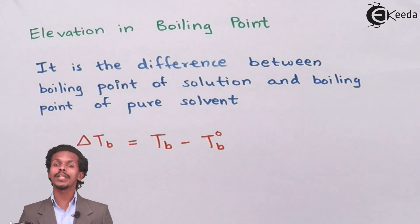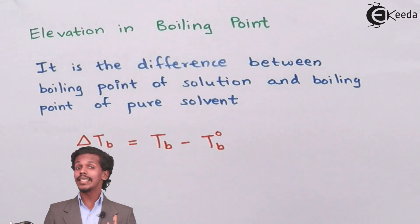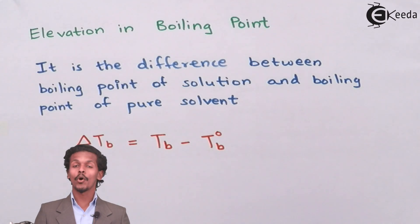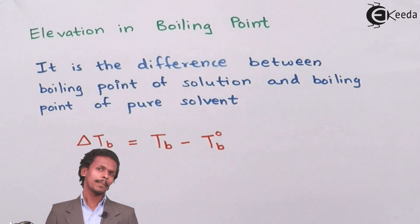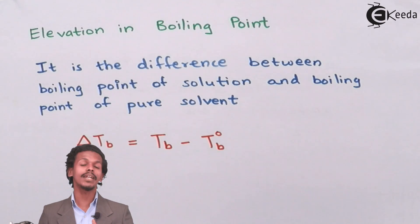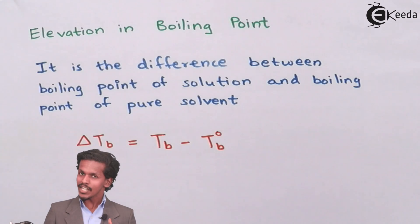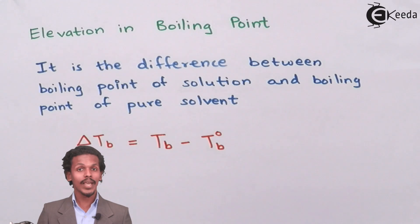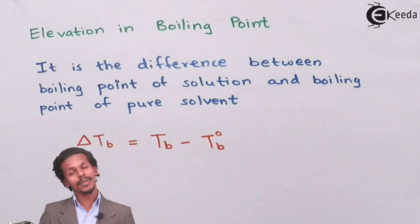You should know that boiling point of solution is more compared to the boiling point of a solvent. Why? Because a pure solvent consists of only one component, while solution is made up of at least two components - solute and solvent. More energy is required to be given to the solution so that its vapor pressure equals one atmospheric pressure, and hence the solution has a higher boiling point compared to the pure solvent.